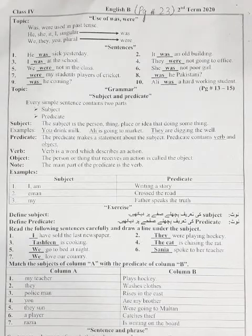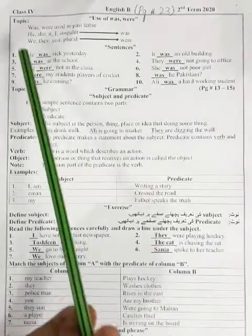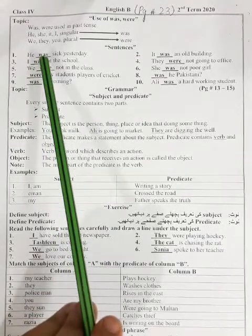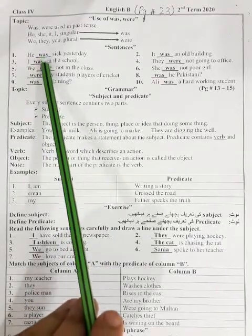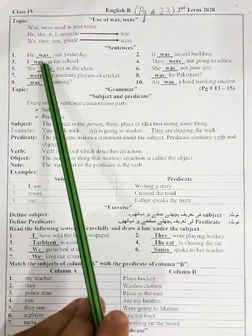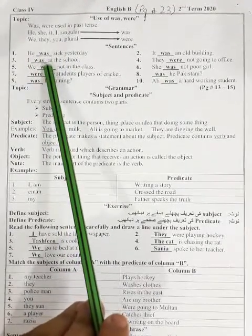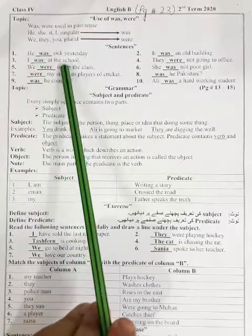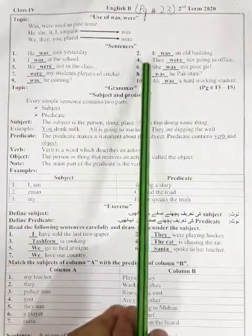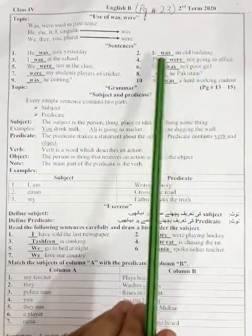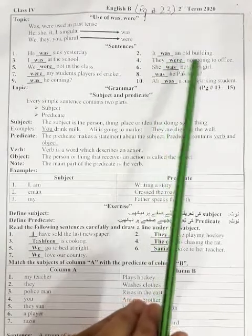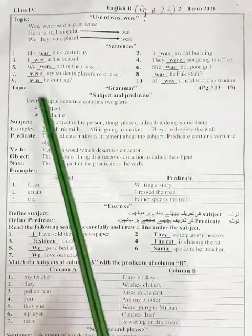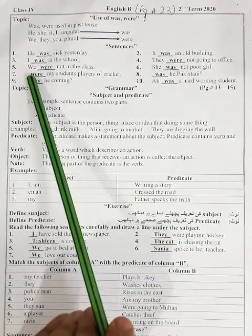کچھ sentences ہیں جیسے: 'He was sick yesterday.' He singular ہے، we use 'was.' 'It was an old building.' ٹھیک ہے؟